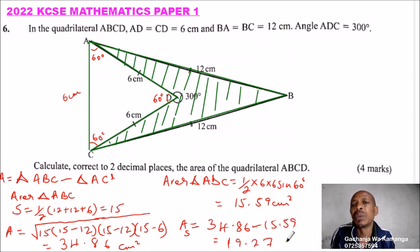19.27 centimeters squared. That is how you get the area of that triangle, and you get your solution format.